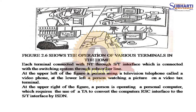At the left part of the figure, a person is using a television telephone called a videophone. At the lower left, a person is watching a picture on a videotext terminal. At the upper right, a person is operating a personal computer which requires the use of a TA to convert the computer RS-232C interface to the S/T interface for ISDN.